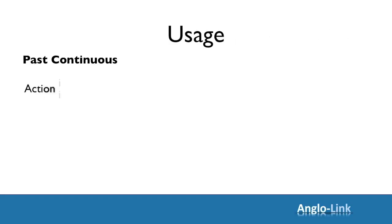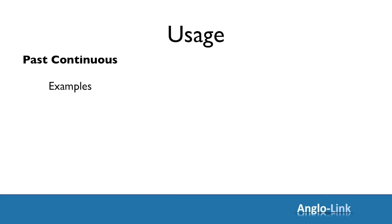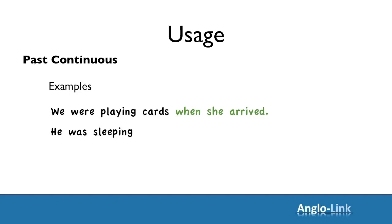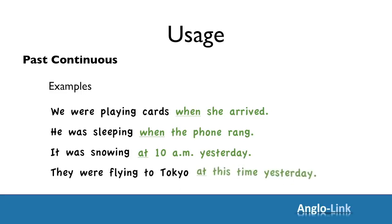Let's look at usage now, starting with past continuous. The past continuous tense refers to an action in progress in the past, either when a shorter action took place or at a very precise moment in the past. For example: We were playing cards when she arrived. He was sleeping when the phone rang. It was snowing at 10 a.m. yesterday.